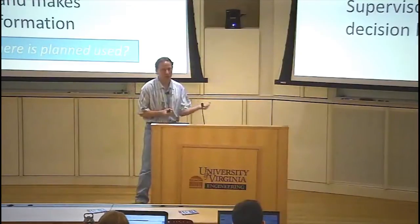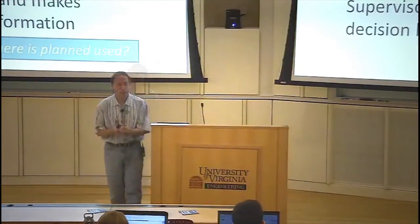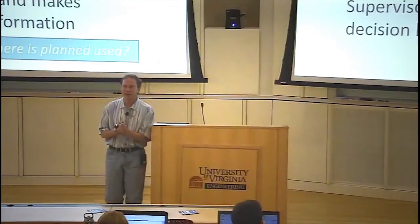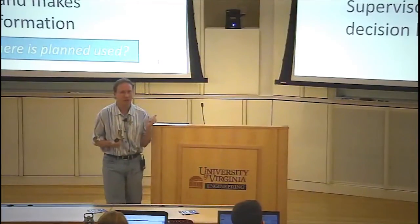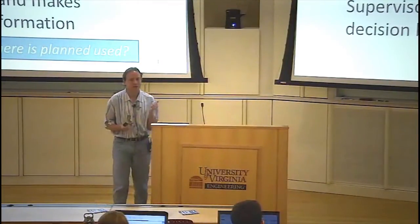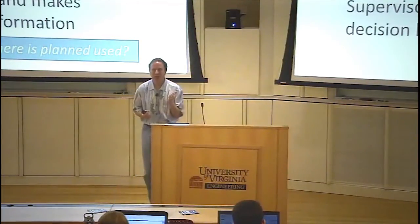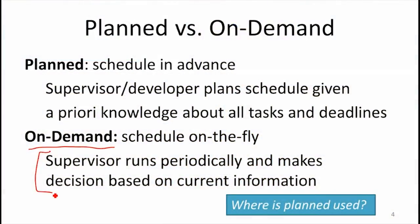The scheduler doesn't try to make predictions about the future too much, though schedulers are getting better at making some predictions even on on-demand ones. This is one of the things Mavericks does to try to save power. But for the most part, the supervisor has to make decisions based on what it knows now — it's not planning ahead, it's making one decision at a time.